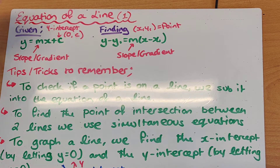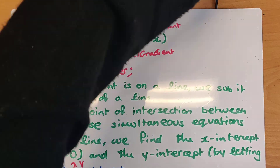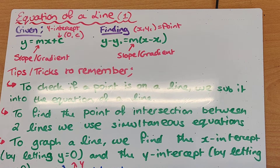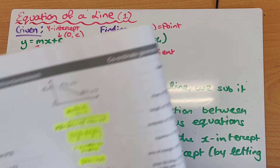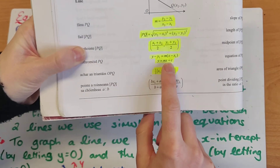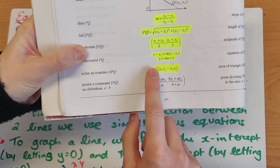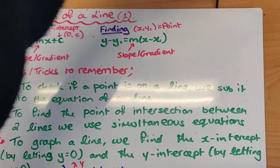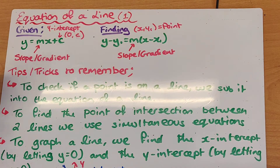You'll notice in your log tables on page 18 that you have two formulas for the equation of a line. You have y minus y1 is equal to m by x minus x1, and you have y is equal to mx plus c, as you can see here.